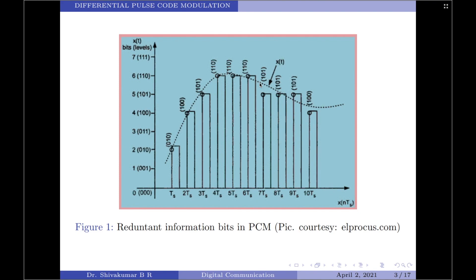If this redundancy can be reduced, then the overall bit rate will decrease and the number of bits required to transmit a sample will also reduce. If we incorporate this modification to the standard PCM technique, then we will have a new technique which is called differential pulse code modulation.